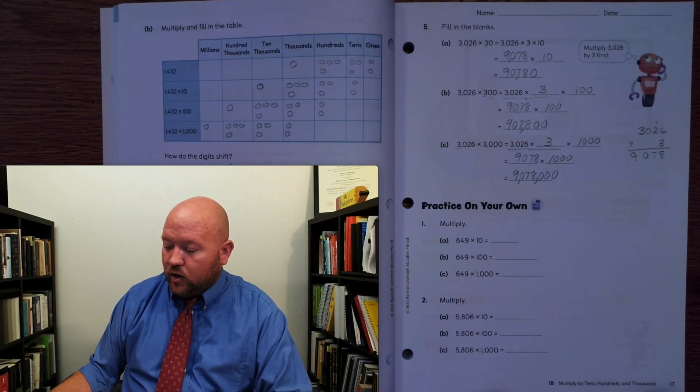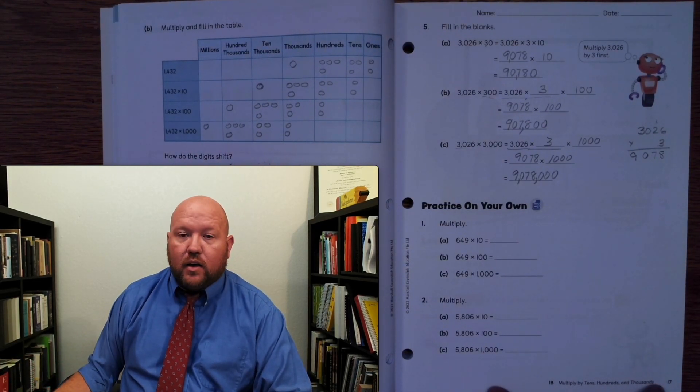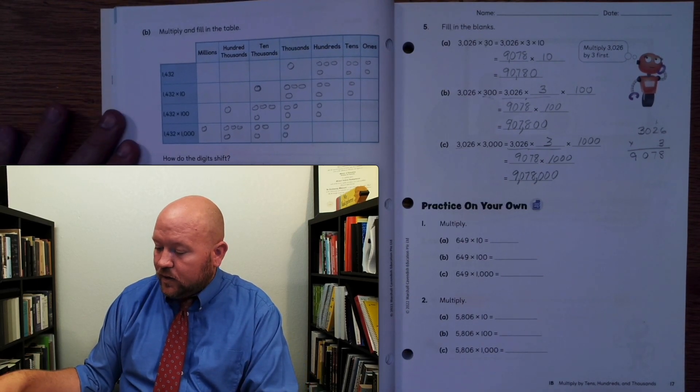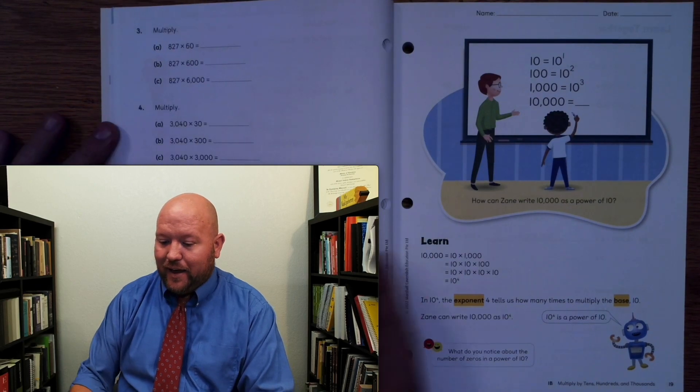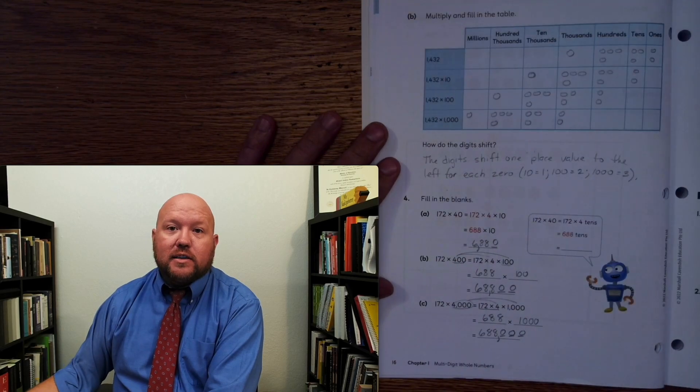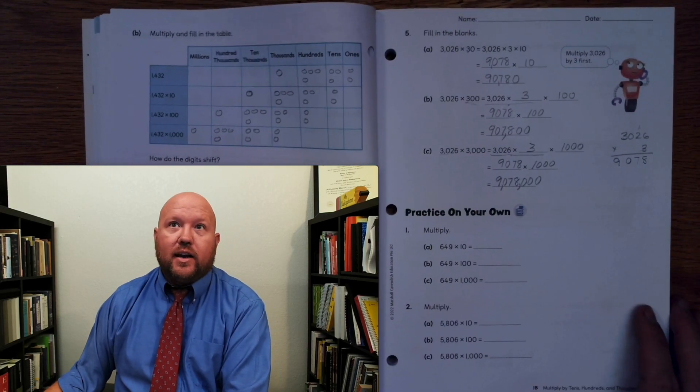So now we have practice on your own — you're going to complete this on your own. Go ahead and pause the video, and you'll do pages 17 and 18. The thing might be a little bit challenging — do your best to figure it out. If you can't, that's okay; we'll come back and do that one together. Go ahead and pause the video now, do those problems, and then unpause when you're ready to review.